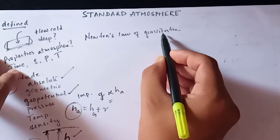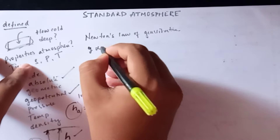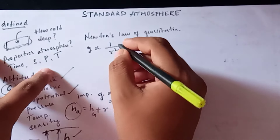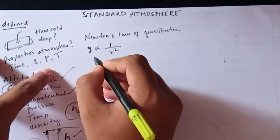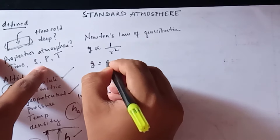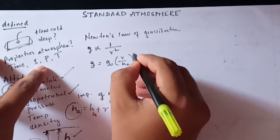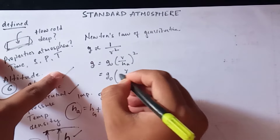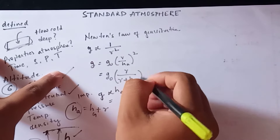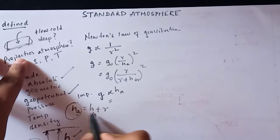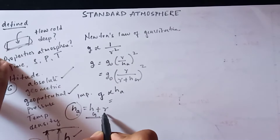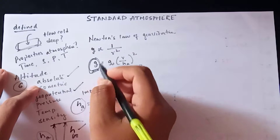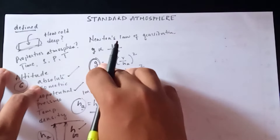Applying Newton's law of gravitation, g varies inversely as the square of the distance from the centre of the earth. Accordingly, the absolute altitude gives g = g₀ · (r / hₐ)², which can also be written as g₀ · (r / (r + h_g))². The variation of g with altitude must be taken into account when dealing with mathematical models of the atmosphere.